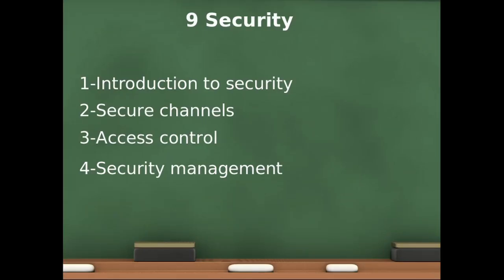Chapter 9 will cover an introduction to security, and the book divides security in distributed systems into three parts. The first part handles secure channels between processes or users, dealing with authentication and encryption. The second part is access control, dealing with authorization. The last part is security management, which supports the first and second parts, covering key distribution and adding or removing users from the system.